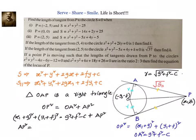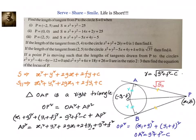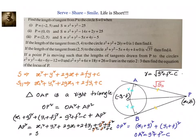Let us simplify. AP² = (x₁ + g)² + (y₁ + f)². Expanding: x₁² + y₁² + 2gx₁ + 2fy₁, then plus g² + f², minus g² minus f², plus c. We can cancel g² and f², and what is left is S₁₁. So we can write that AP² = S₁₁.